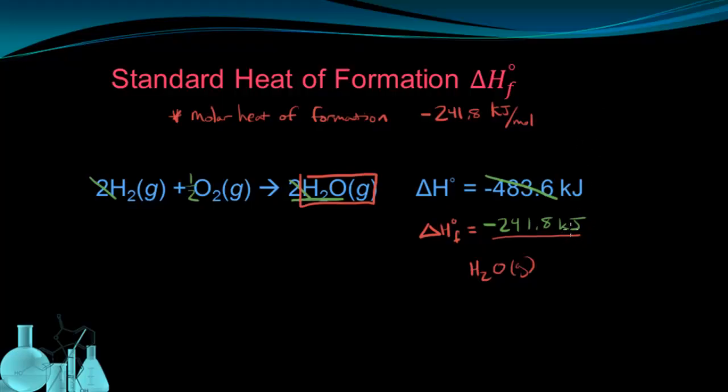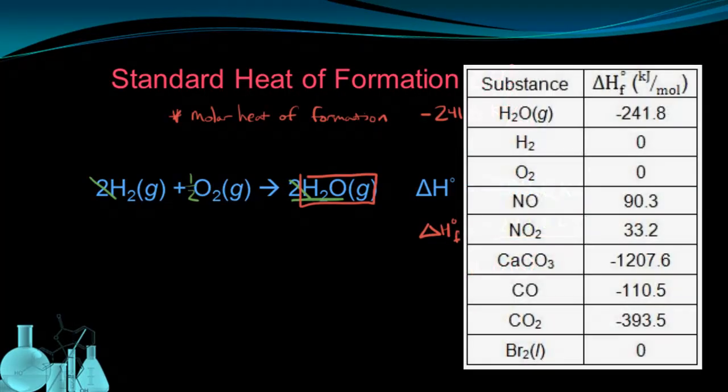Now typically these standard heats of formation can be found in data tables, reference tables. Here's an example of a table that shows thermochemical information such as standard heat of formation. We can see we have several substances shown here with standard heats of formation for each one.